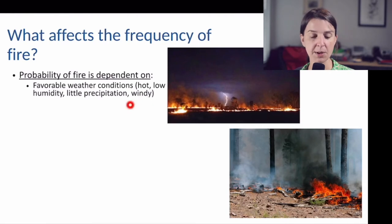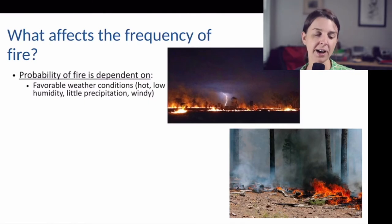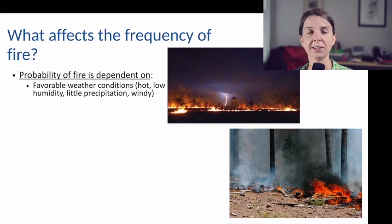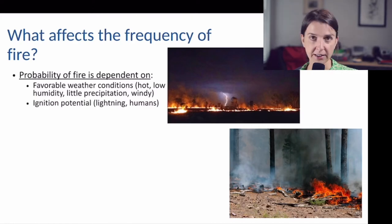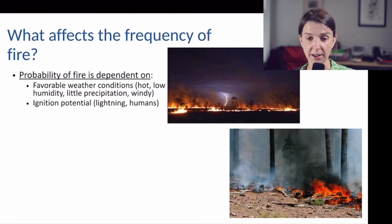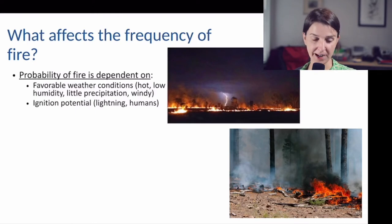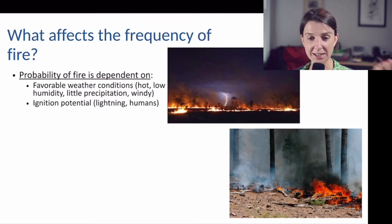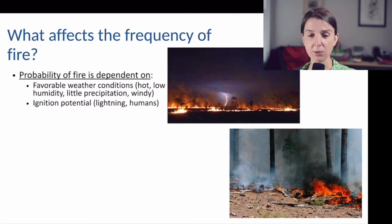Windy conditions, while not necessary to start a fire, are certainly good for spreading fires. If conditions needed for fire are rare in an ecosystem, fire isn't going to be very common there. Another thing that influences fire probability and thus the fire return interval is ignition potential — whether there are events that could ignite a fire in the first place.